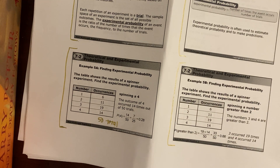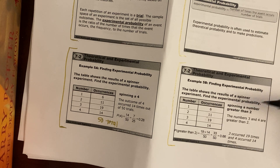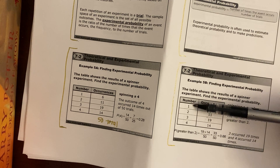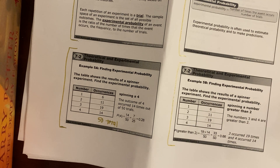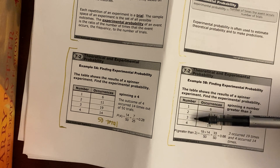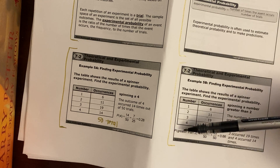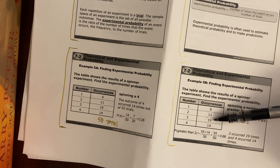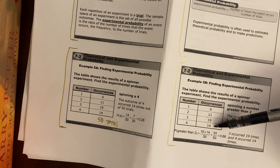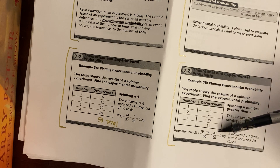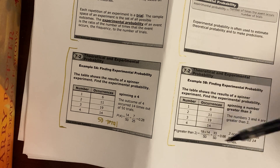Let's look at another example. The table shows the results of a spinner experiment — find the experimental probability of spinning a number greater than two. The spinner has numbers one, two, three, or four. Spinning greater than two means we had to spin a three or a four. We spun a three 19 times and a four 14 times, so 19 plus 14 gives 33 times that we spun a number greater than two, out of a total of 50 trials. As a decimal, that gives us 0.66.